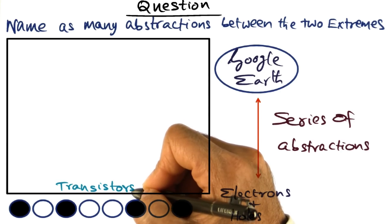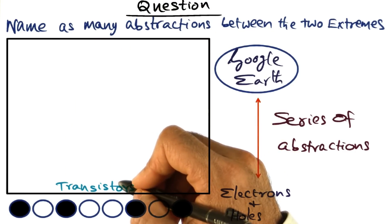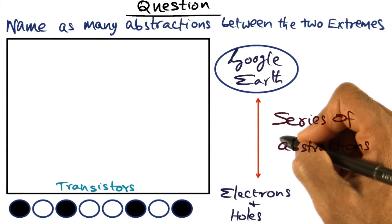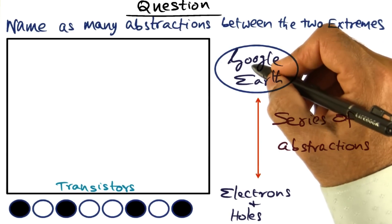Now what I want you to do is fill the rest of this box with all the other abstractions that sits above transistors all the way up to the application.